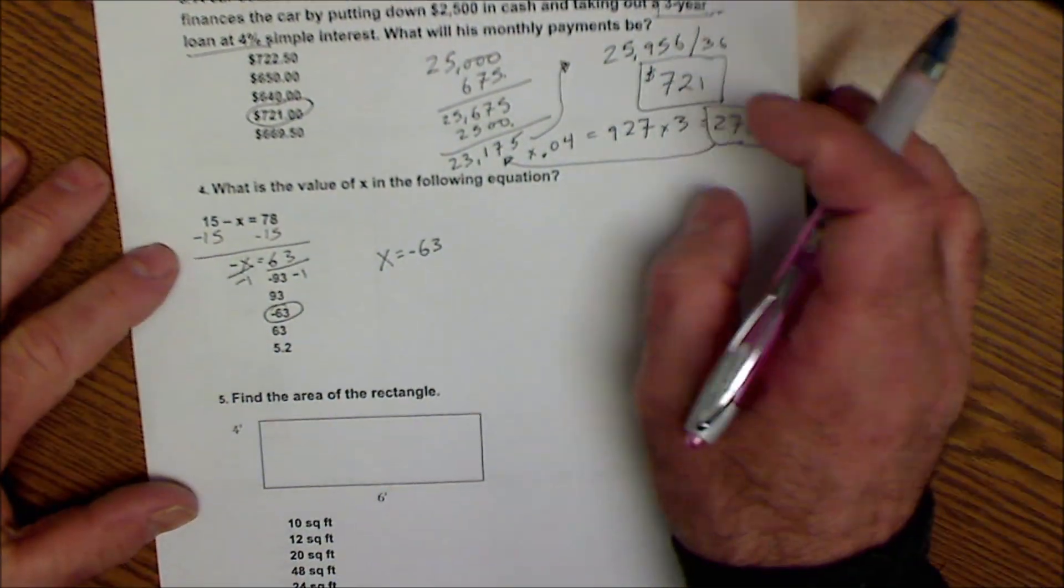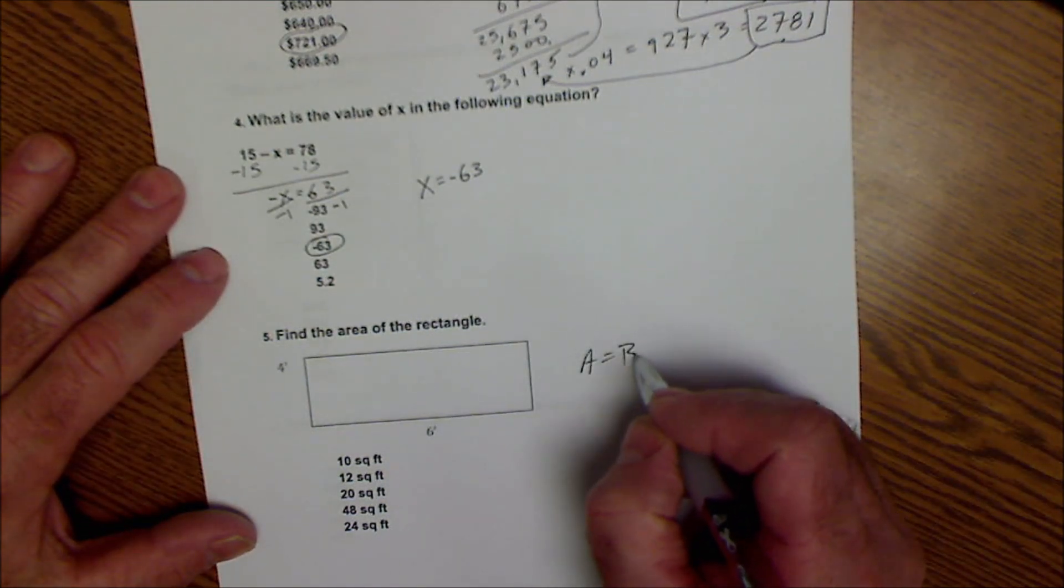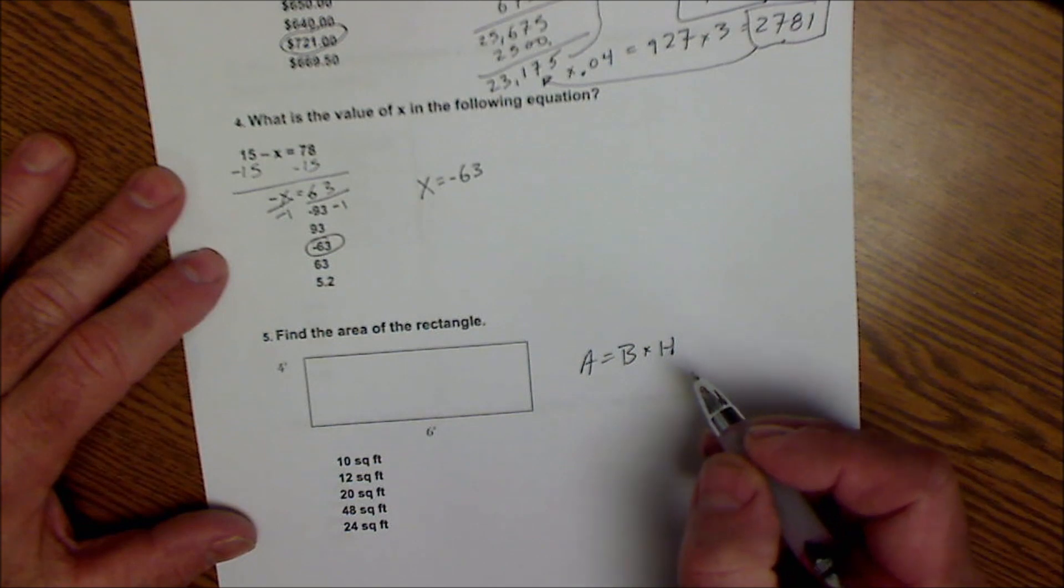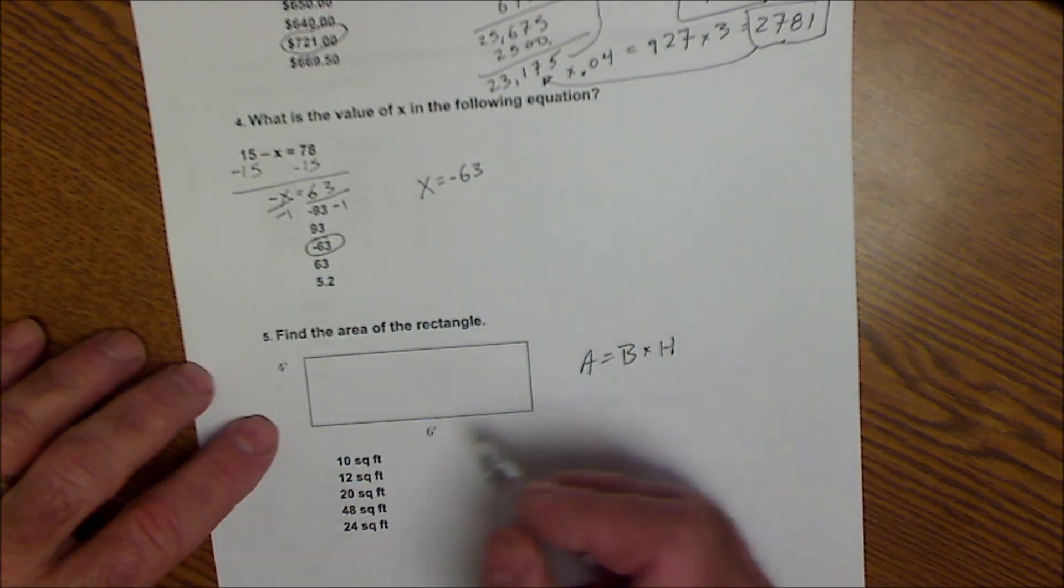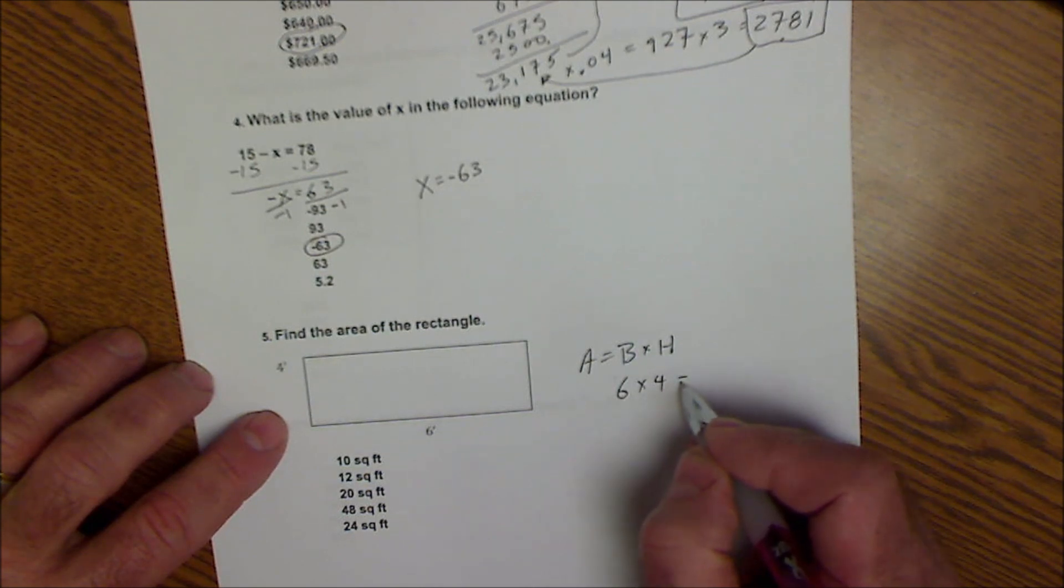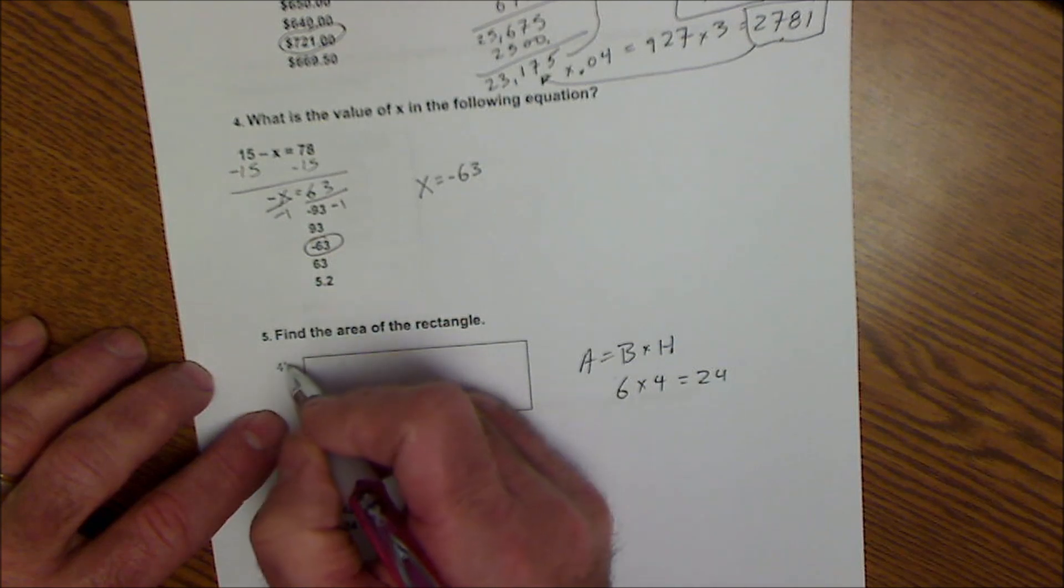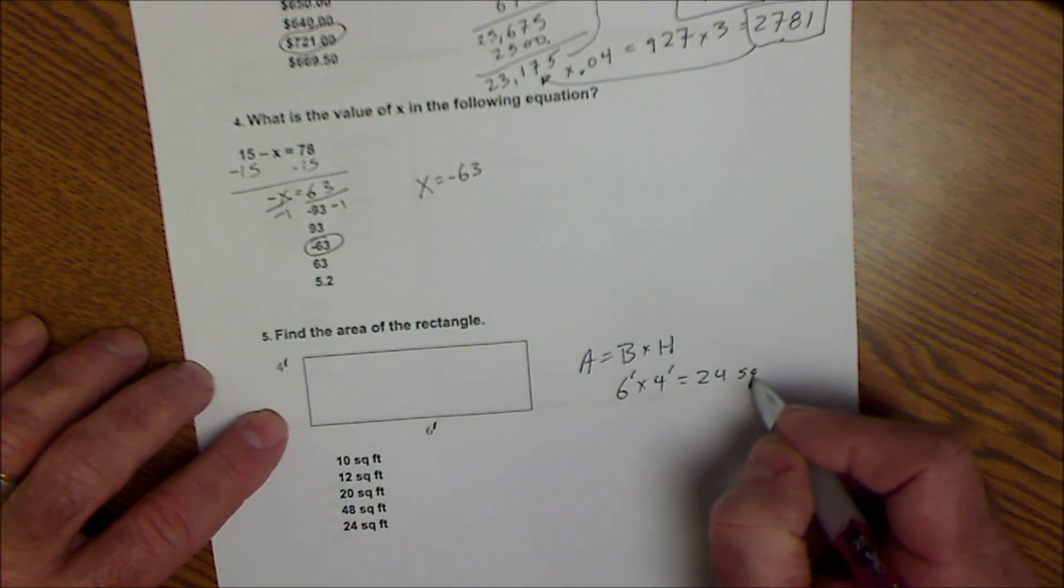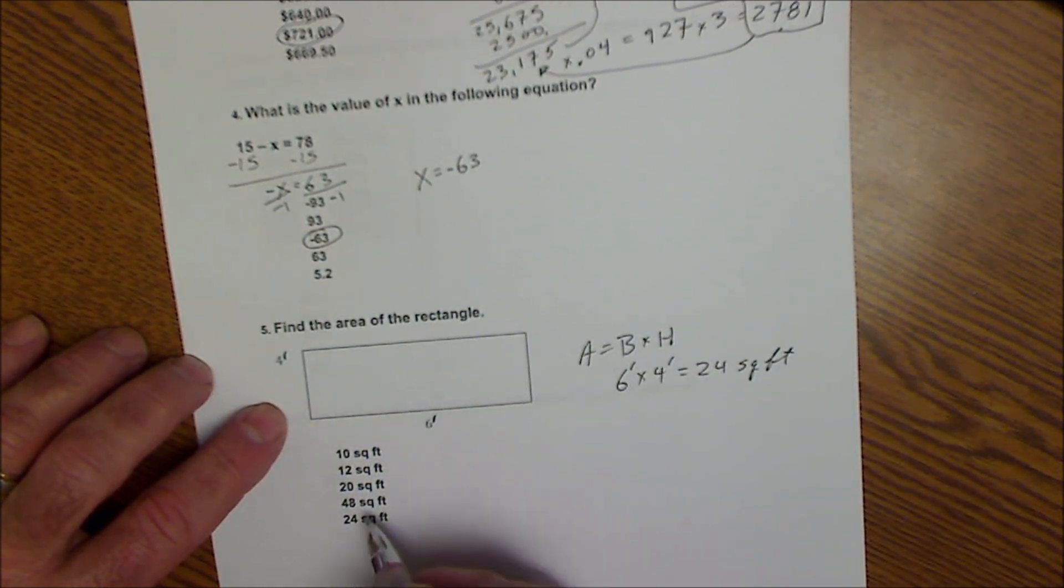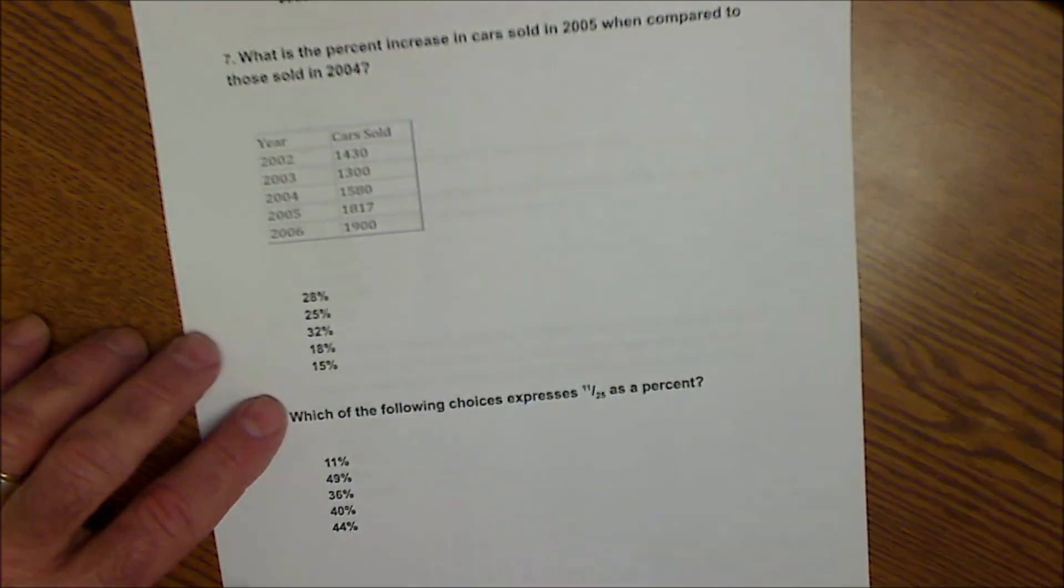Find the area of a rectangle. Area of a rectangle is base times height. So area of a triangle is base times height divided by 2. Area of the rectangle is base times height, 6 times 4, 24. That little tick mark right there means feet. So I'm going to have 6 feet times 4 feet gives me 24 feet times feet is square feet. So the answer is 24 square feet.